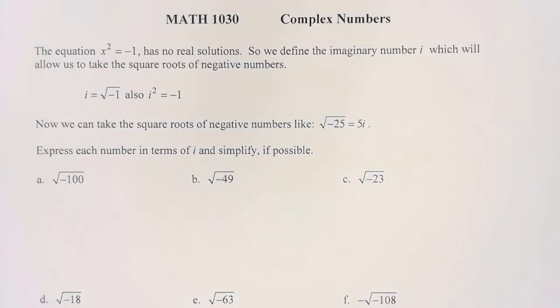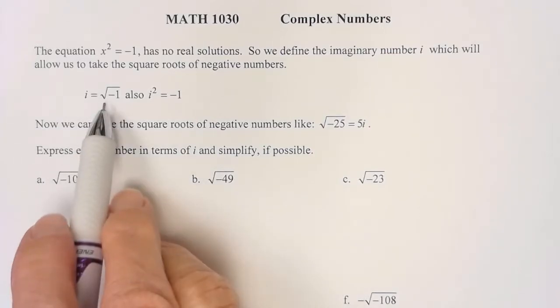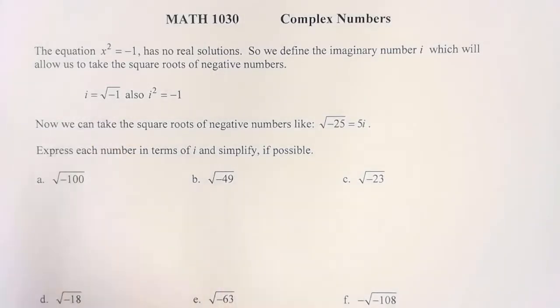i is equal to the square root of negative 1. Also, if you square both sides, i squared would equal negative 1, because remember when I square both sides or square a square root, it frees the radicand.